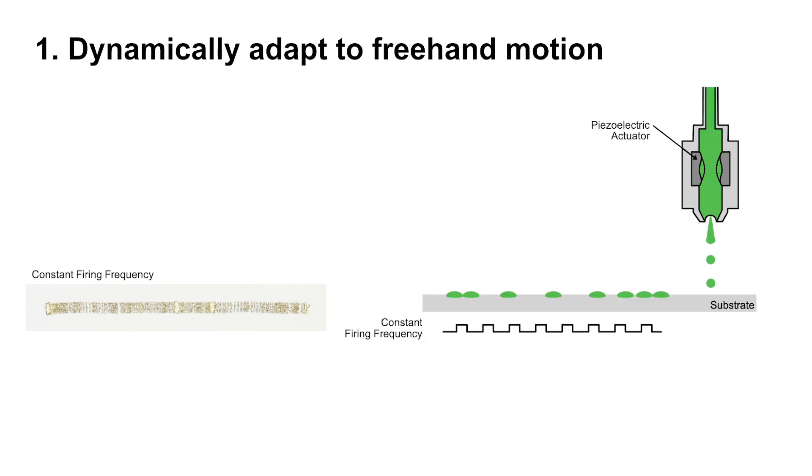Based on the principles that I told you, the reason is that when we eject droplets at constant firing frequency, the space between the droplets on the substrate becomes dependent on the speed of movement, which is not desirable.